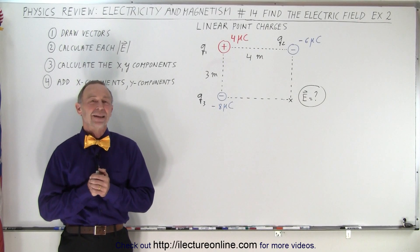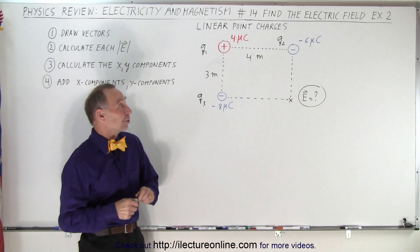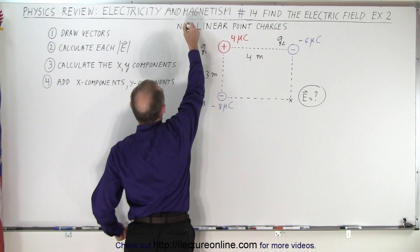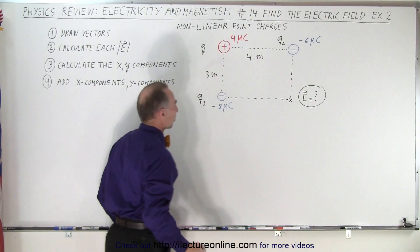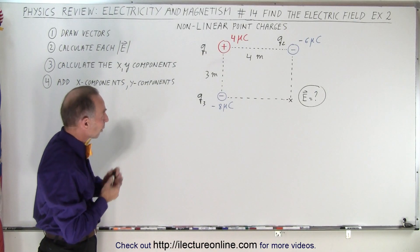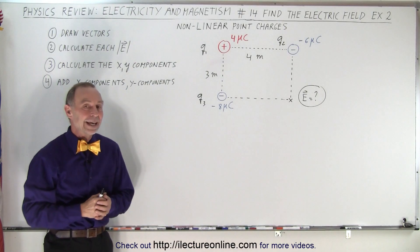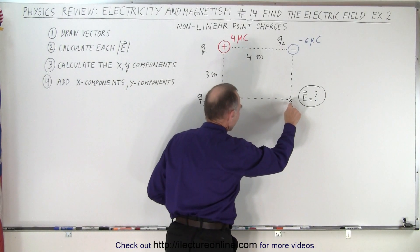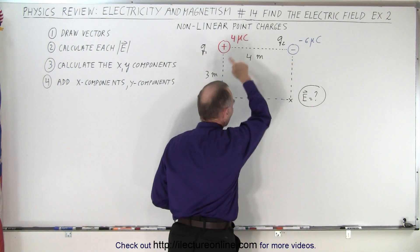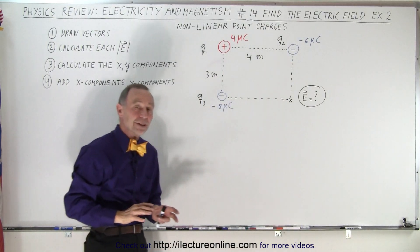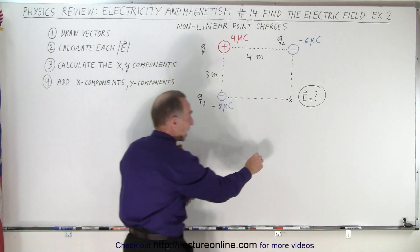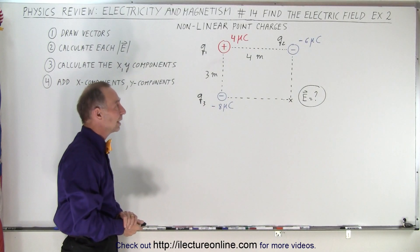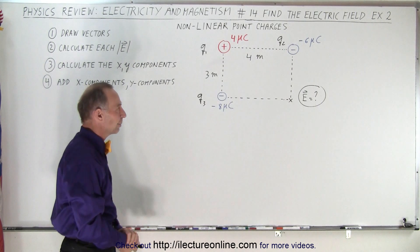Welcome to ElectronLine. Now let's take a look at a non-linear distribution of charges. Here we have three charges — one positive, two negative. We're trying to find the electric field at a particular location, so we put it at the corner of this rectangle. It makes it a little more convenient, but it could be anywhere. It doesn't matter that it's on the rectangle — it just makes it easier to work out the problem.